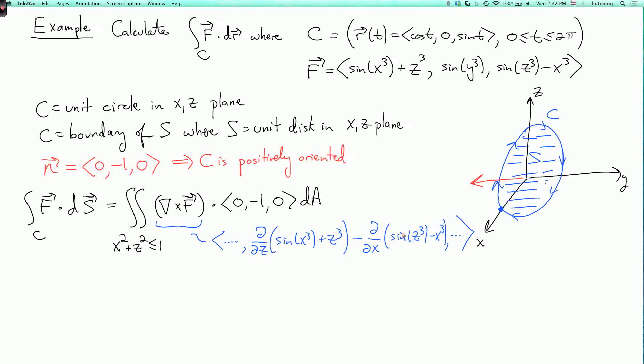And this sin(z³) disappears because it's getting differentiated with respect to x. So this whole thing is 3x² plus 3z². That is a lot nicer than what we had before.